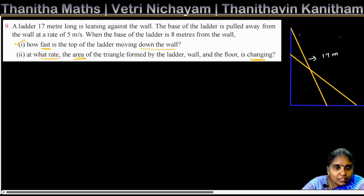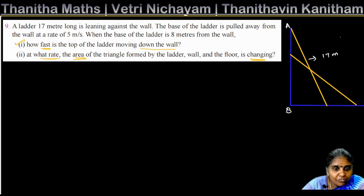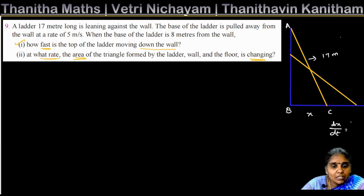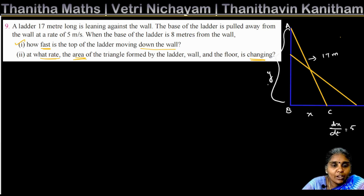This triangle is ABC. The base is x, and dx/dt is 5 meters per second. The height is y, and dy/dt is the rate of change of the height — that is what we need to find.